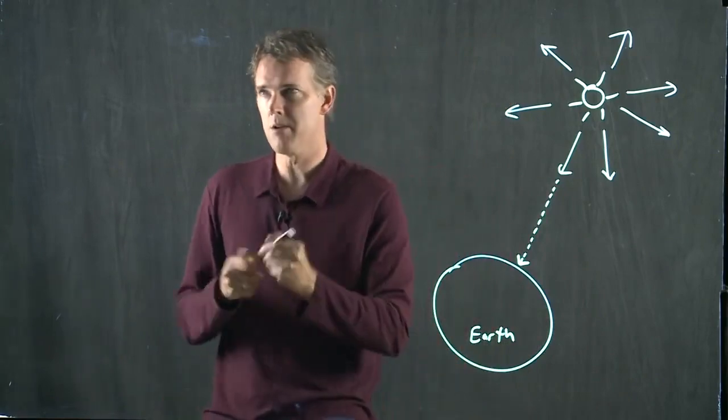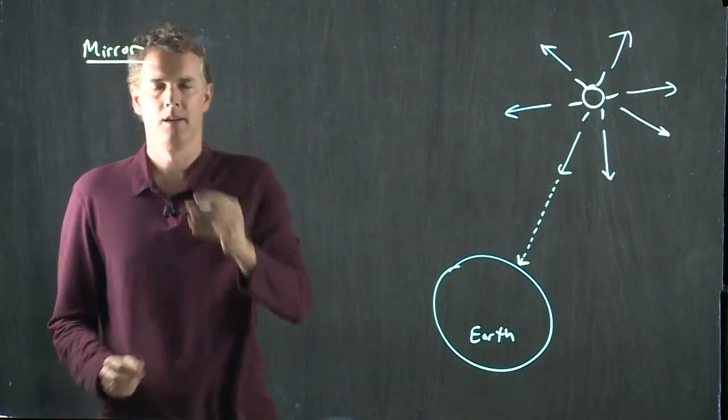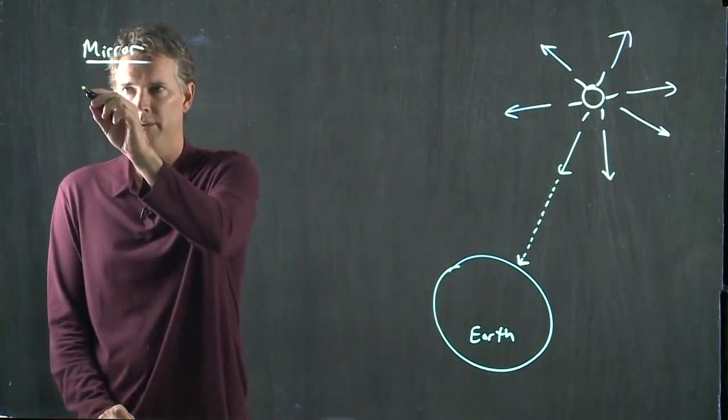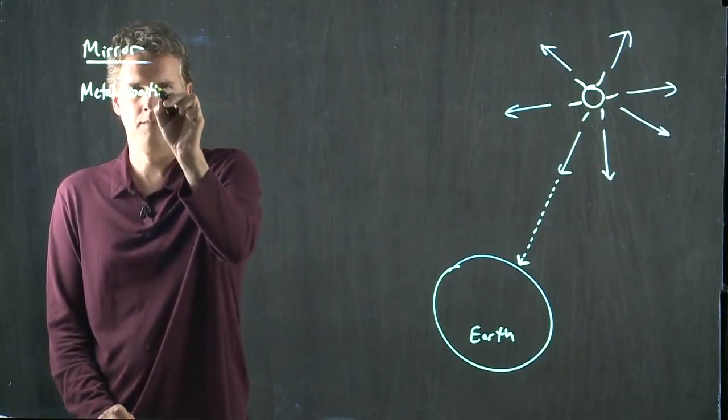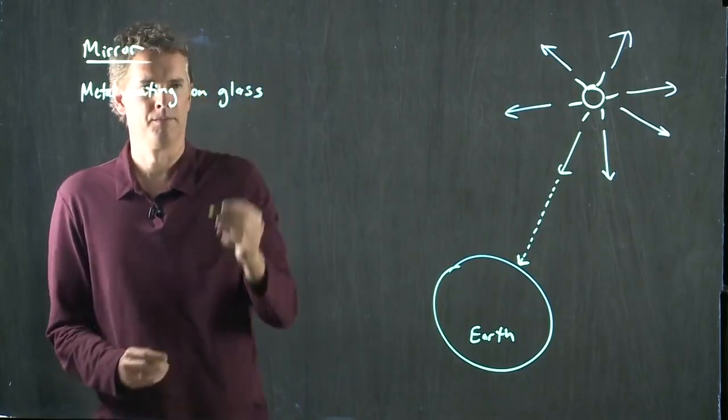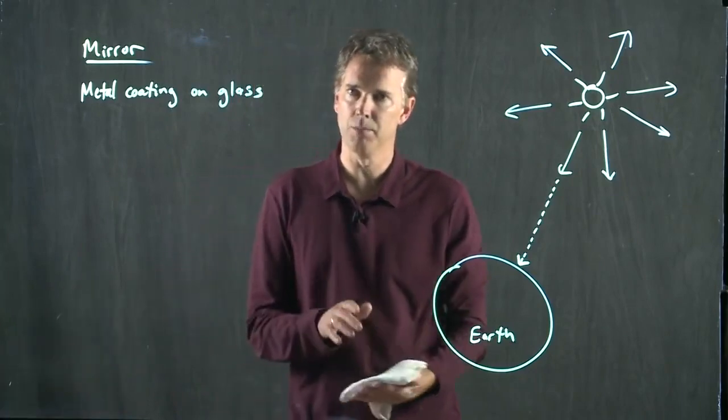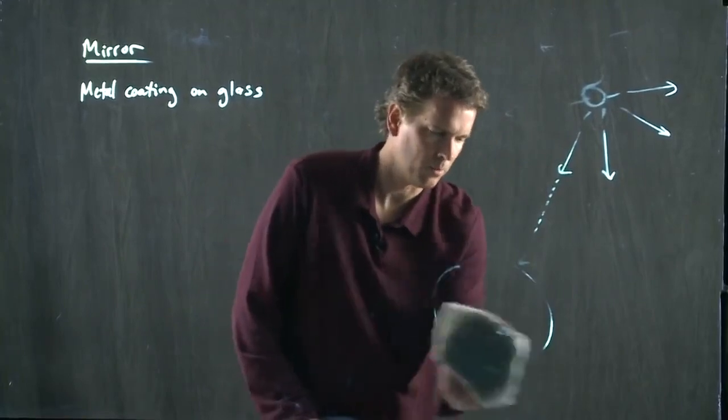What is a mirror? A mirror is very simple. It is a coating of aluminum or silver on glass.